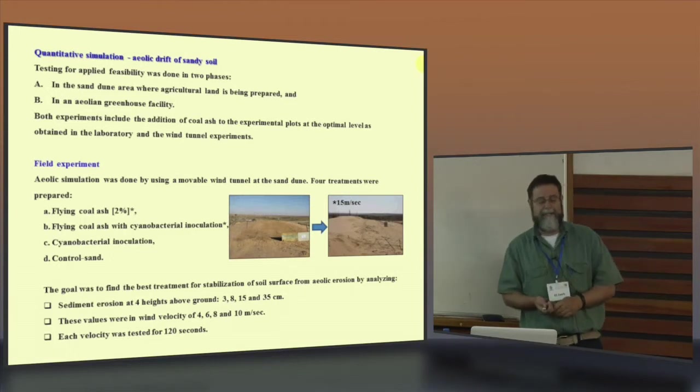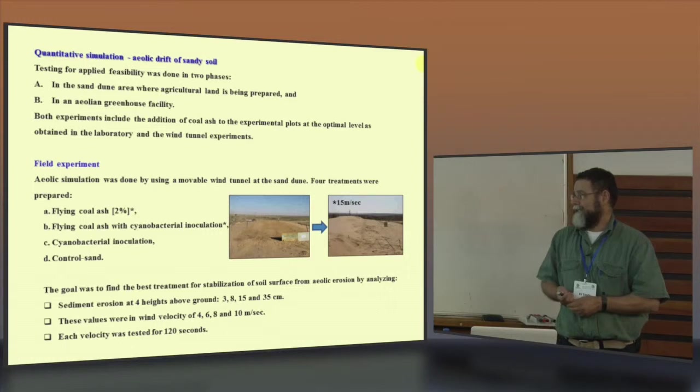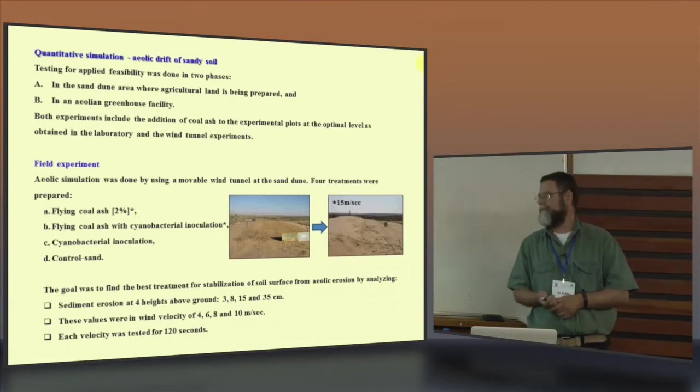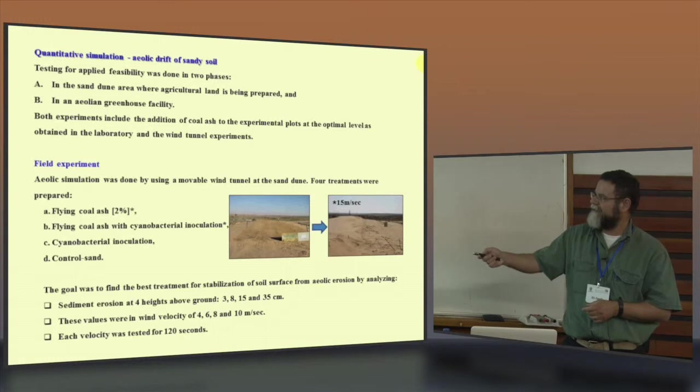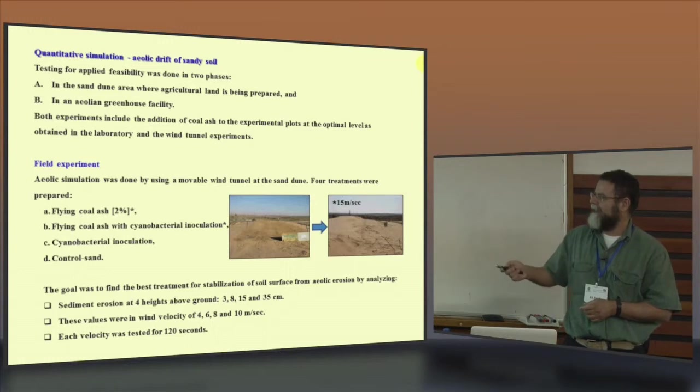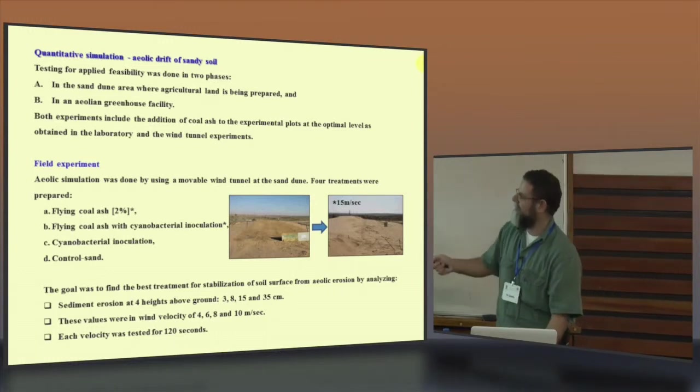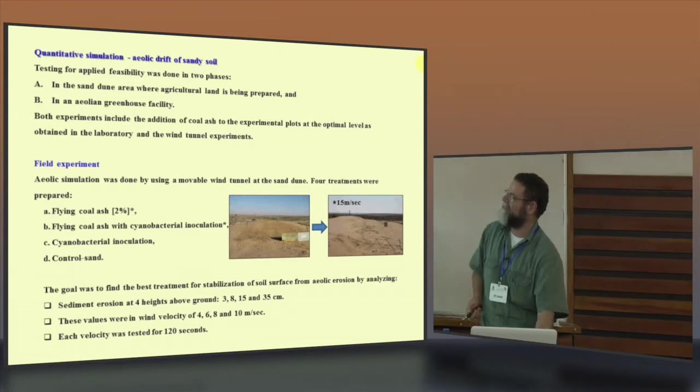What's happened in the field? Two weeks before we finished the experiment, we had one of the decade wind storm. This is the area how it looked before, and this is the area how it looked after. You see a new sand dune just built on the two experiment with the coal ash. So we can compare only the inoculant and the control.